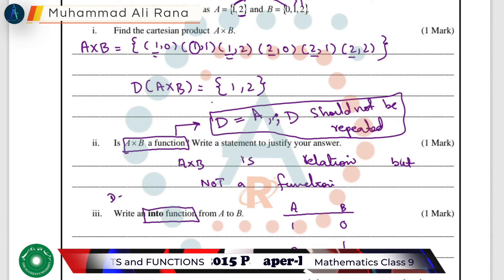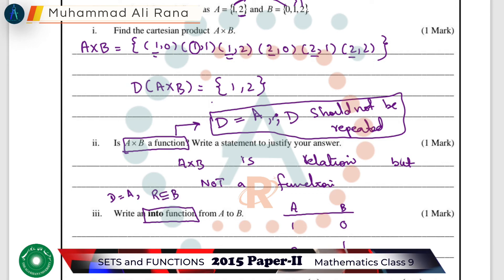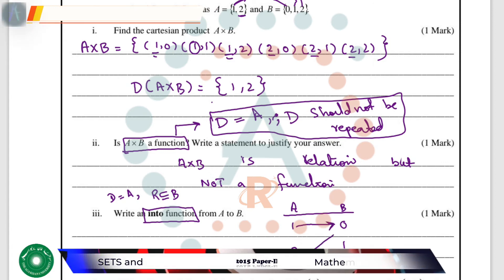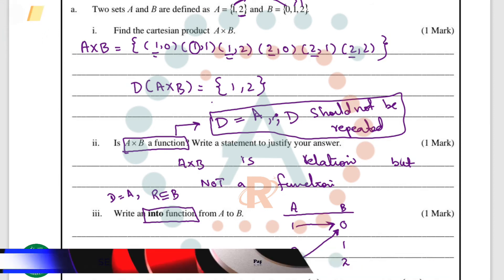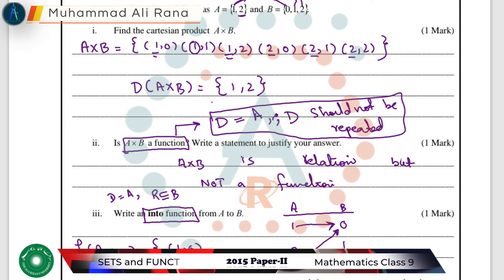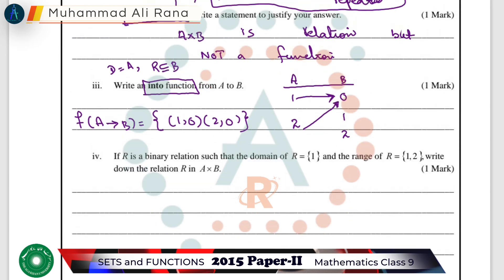For an into function, the domain should obviously be equal to A, and the range should be a subset of B — there should be at least one element in Set B that is not paired with any element of Set A. So an example of an into function is {(1,0), (2,0)}. We can make many into functions from these two sets, but we only need to find one. This function from A to B is an into function from Set A to Set B.